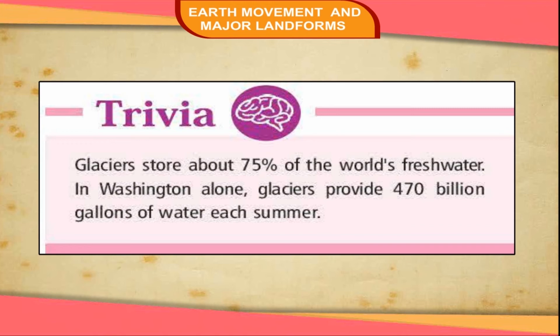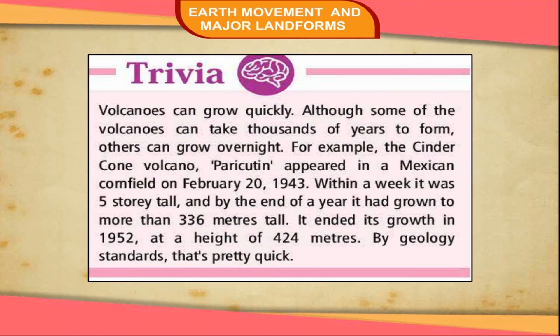Glaciers store about 75% of the world's fresh water. In Washington alone, glaciers provide 470 billion gallons of water each summer.